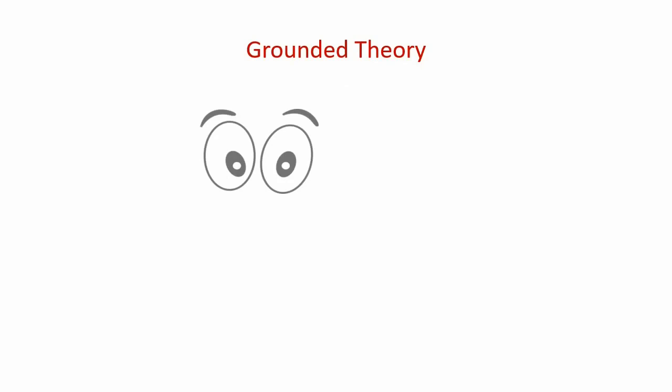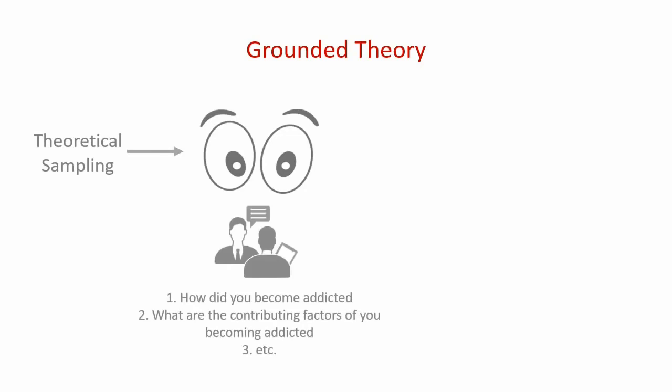Grounded theory is based on a combination of the inductive and deductive research approaches. It is inductive in the sense that you start with making a series of observations, and to do so you must find a group of people that exhibit the behavior through theoretical sampling. In our example, observation means collecting data — usually qualitative, such as interviews — that will eventually inform a theoretical framework explaining the process of becoming addicted to social media.